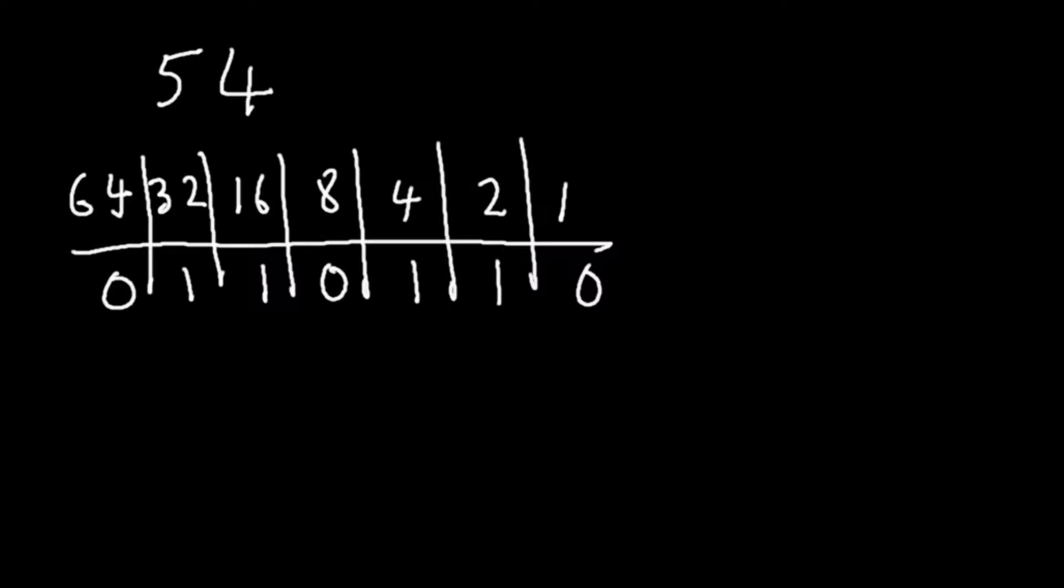So it's actually 6 bits. So we need 6 bits as a minimum to represent the number 54. Just to reinforce our understanding of that, we can apply it again to a different problem.